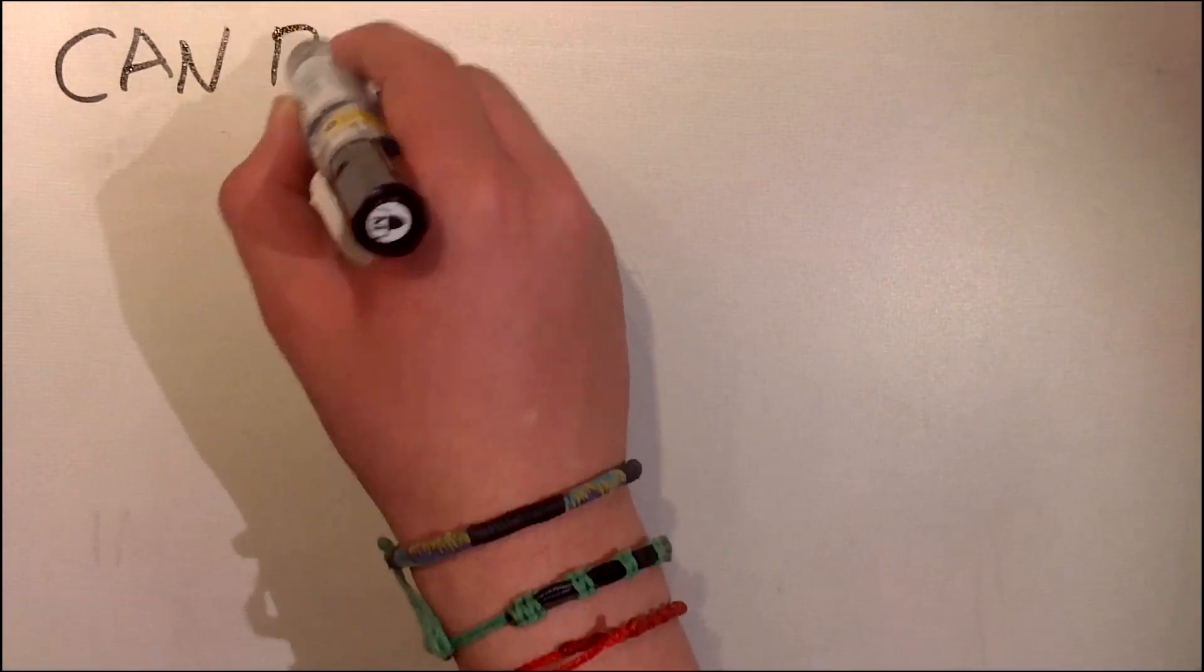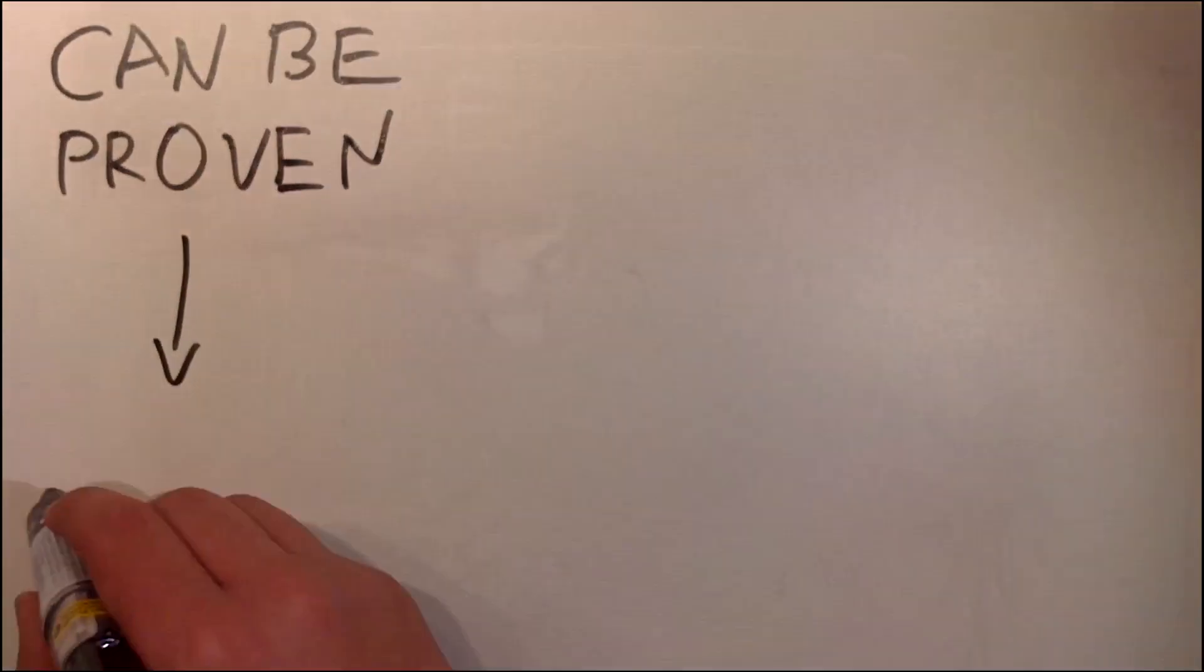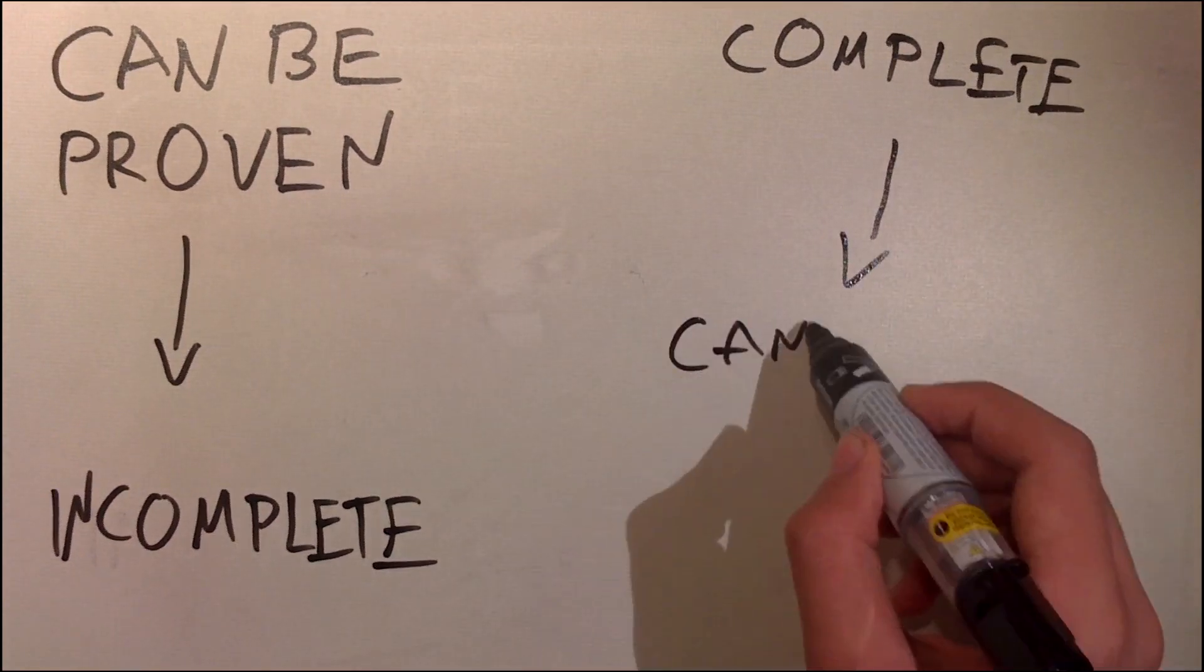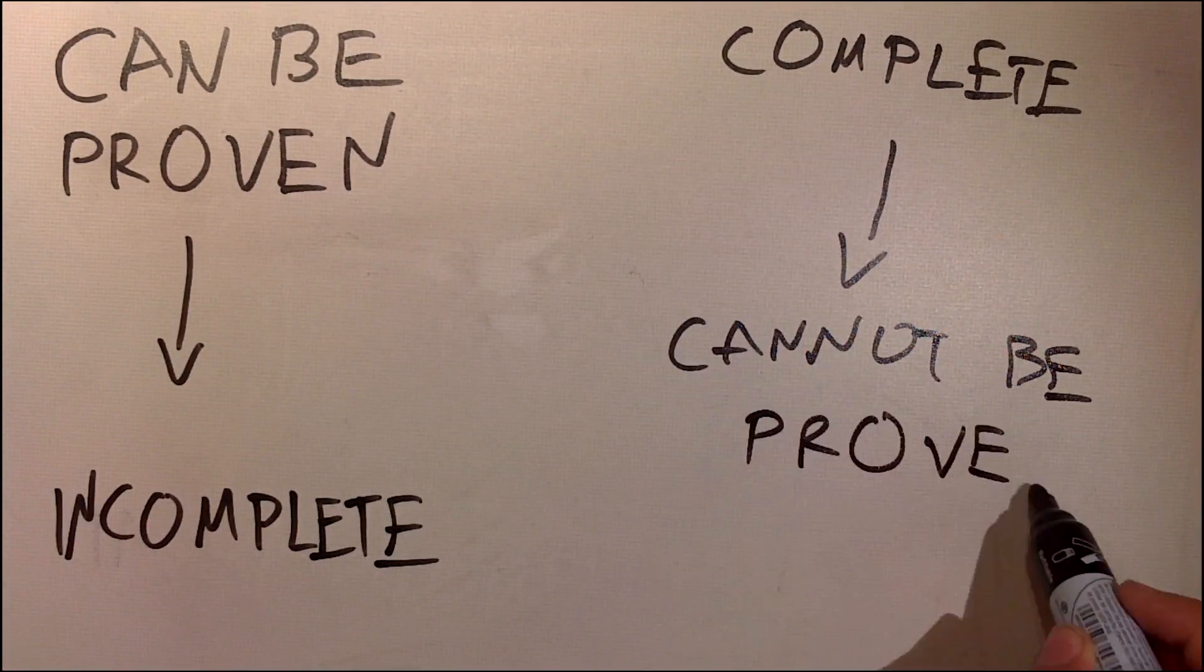In other words, if our system can indeed be proven, it will not be complete, and vice versa. If our system is complete, it cannot be proven.